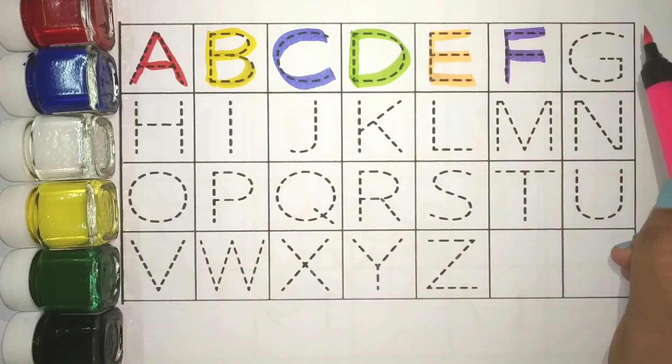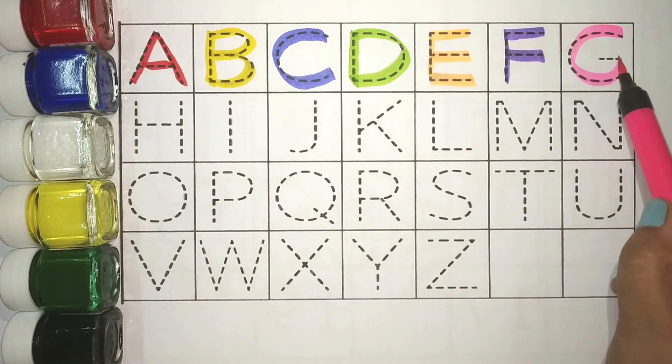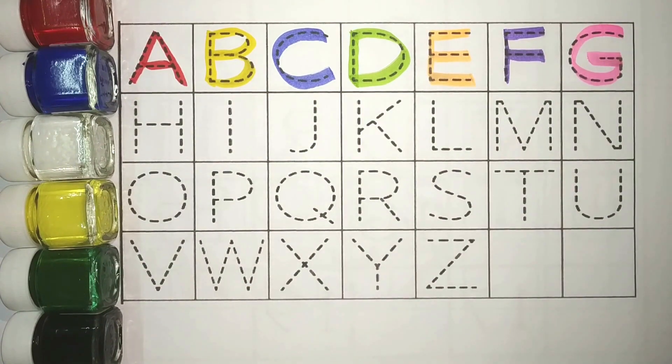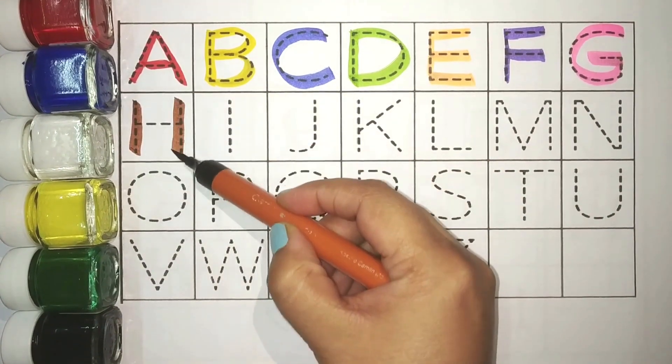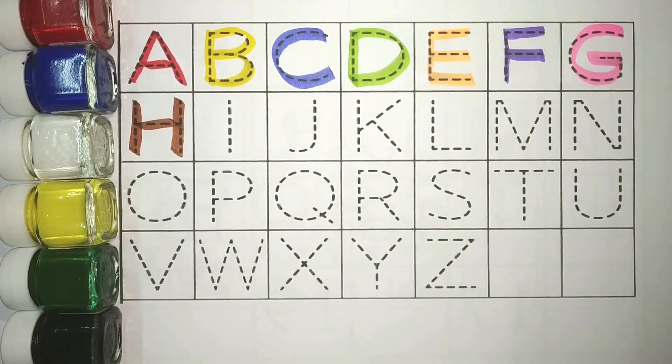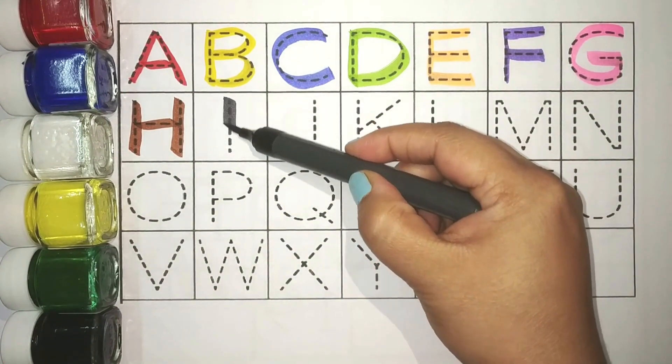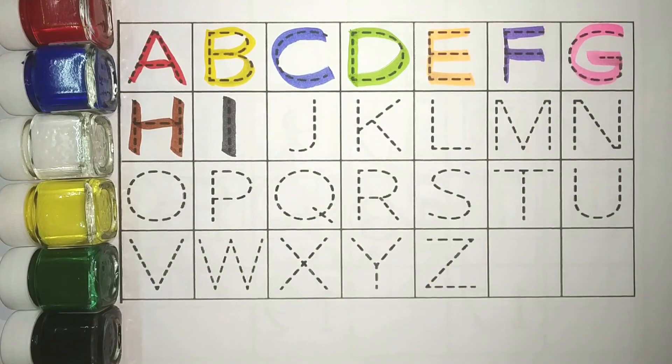Pink, G. G for grape. Brown, H. H for heart. Gray, I. I for ink pot.